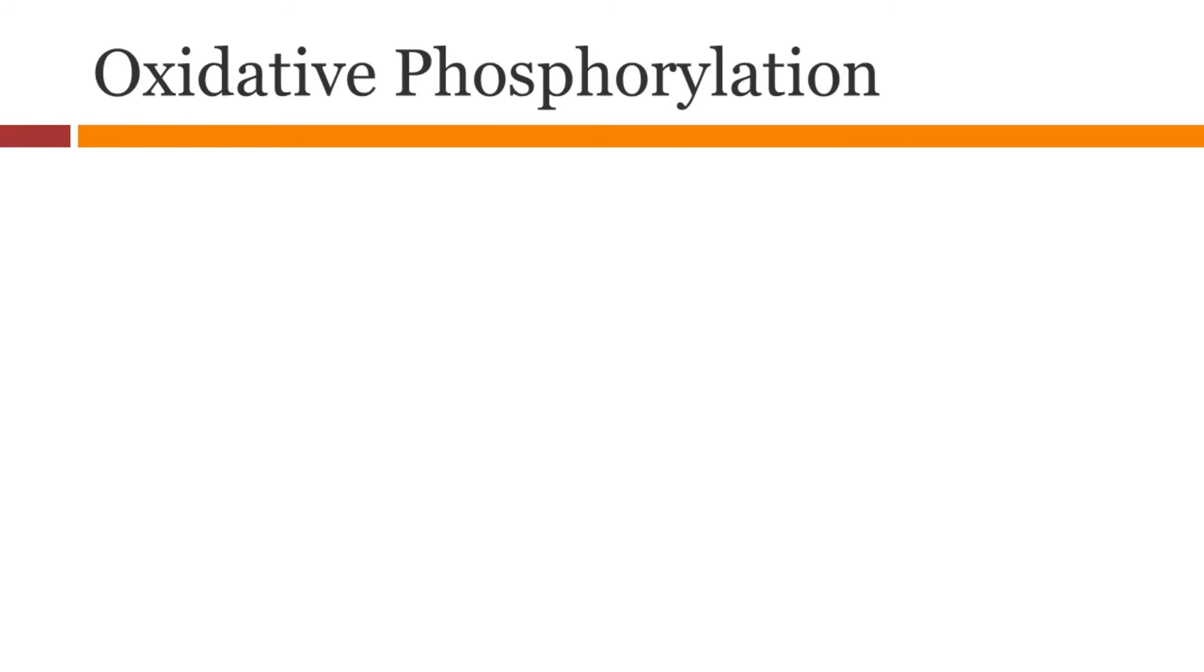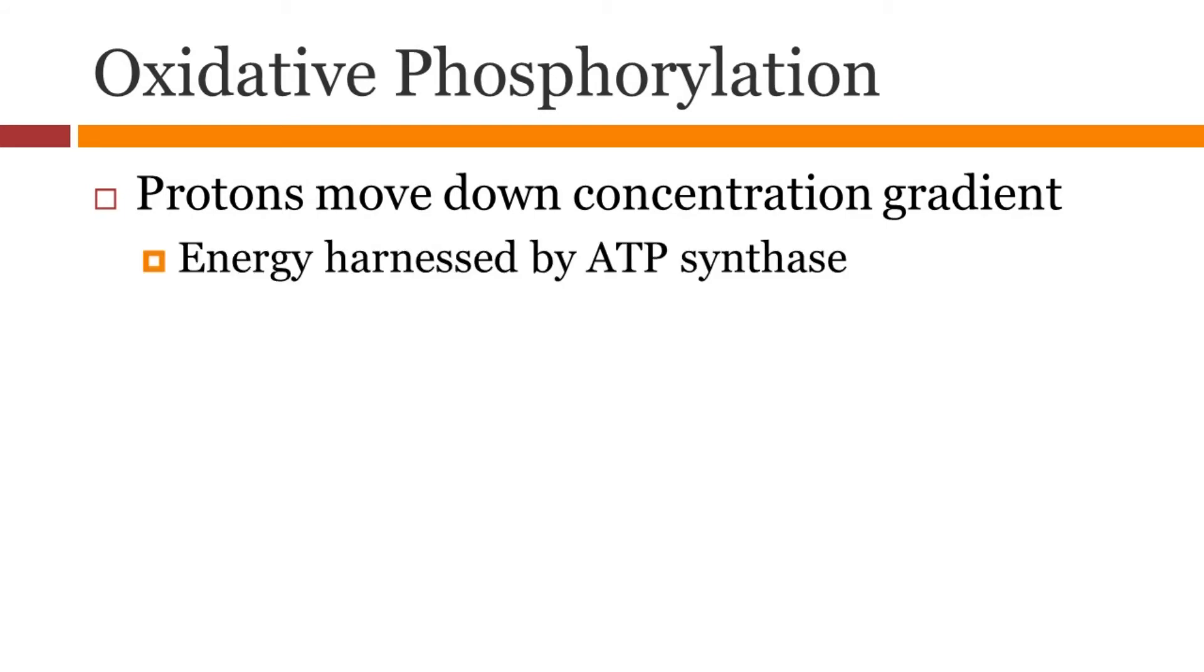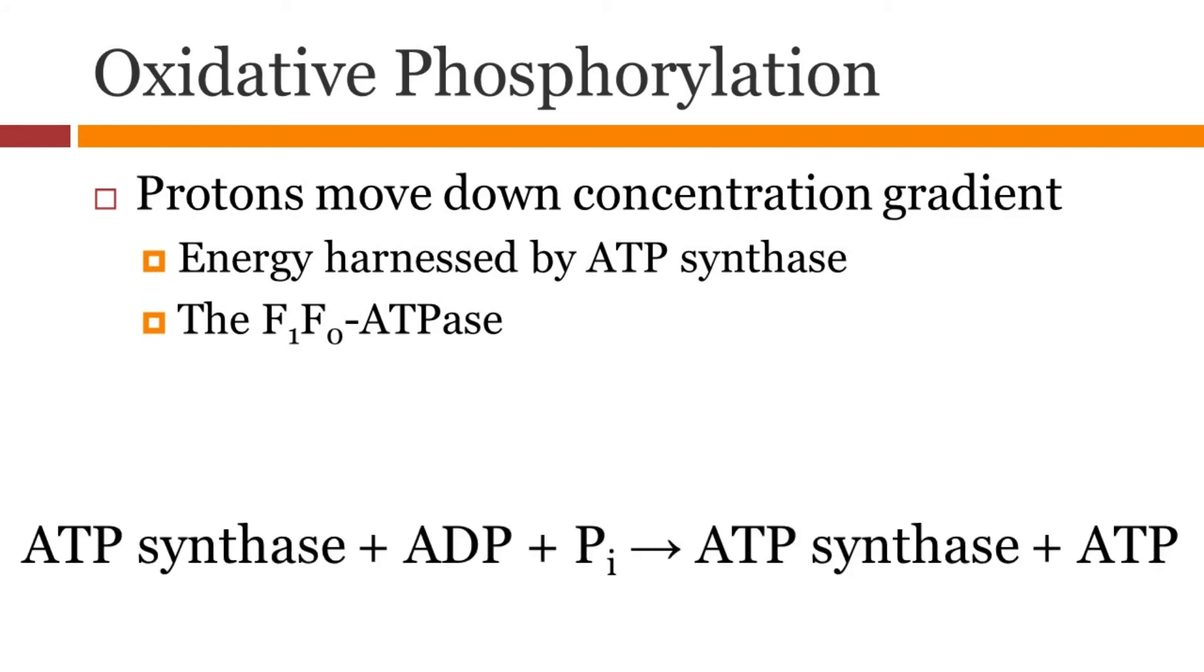Oxidative phosphorylation is the process by which the protons move down their concentration gradient into the matrix of the mitochondria. The protons pass through the F1, F0 ATPase and the energy can be harnessed by ATP synthase to produce ATP. Here is the overall reaction.